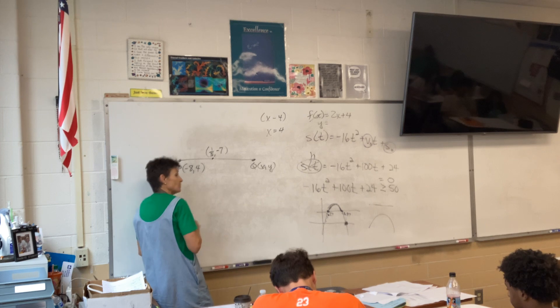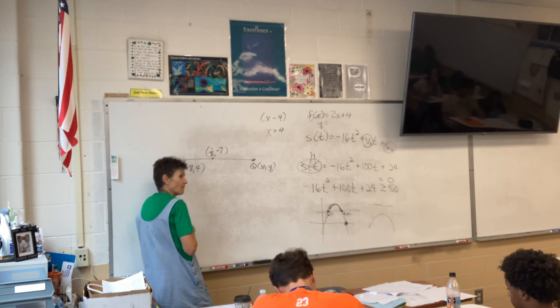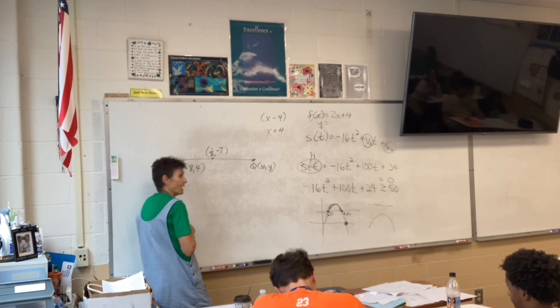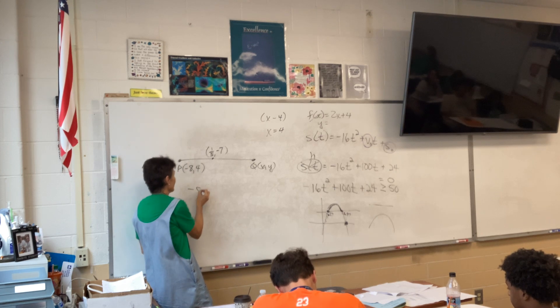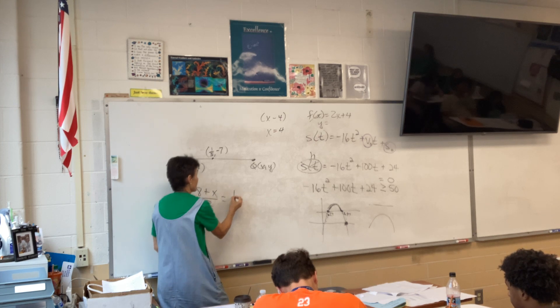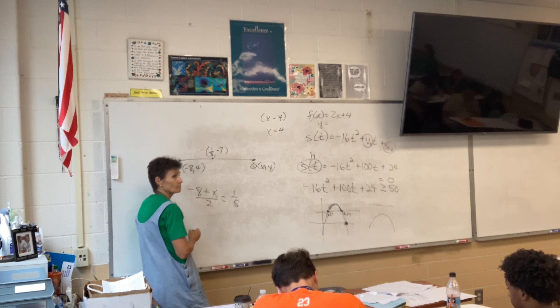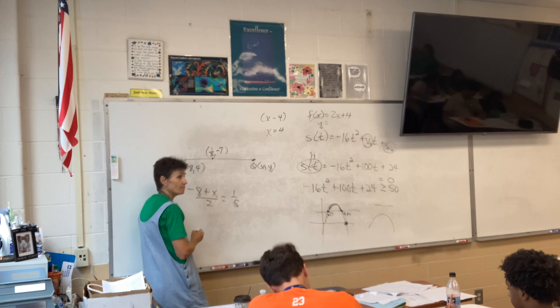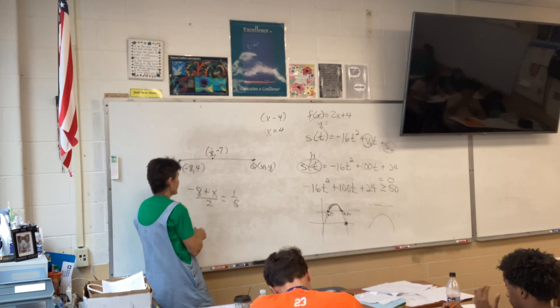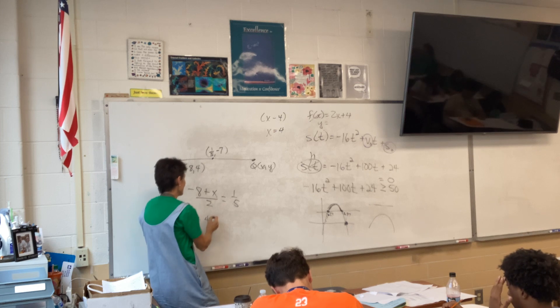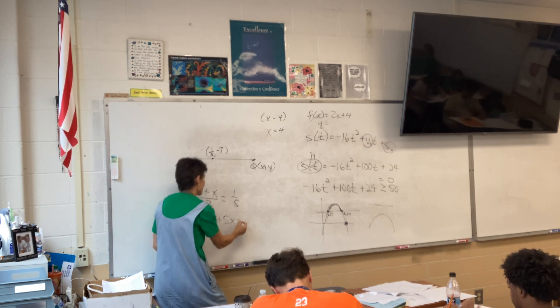I am looking for Q. P is negative 8, 4. Q is one-fifth, negative 7. I mean, the midpoint is one-fifth, negative 7, and my job is to find Q, right? So, I can think of a couple ways right off the bat to do this. What's one way I could do this?